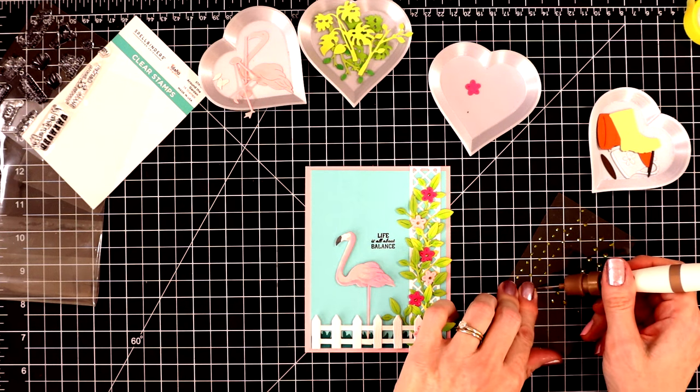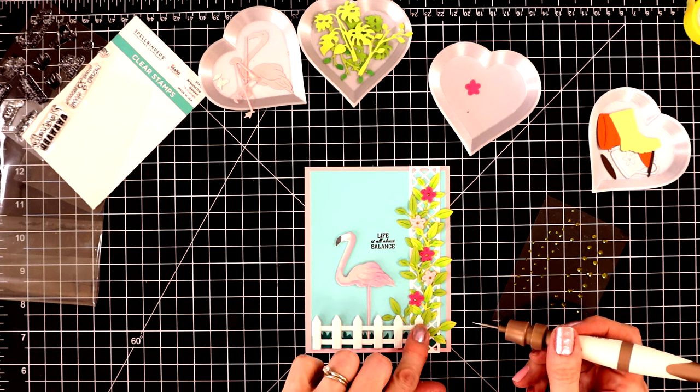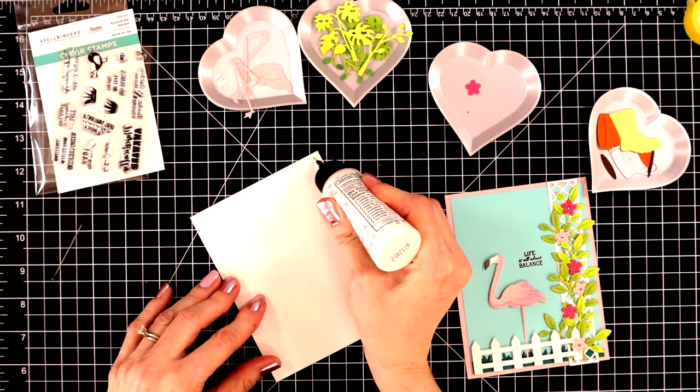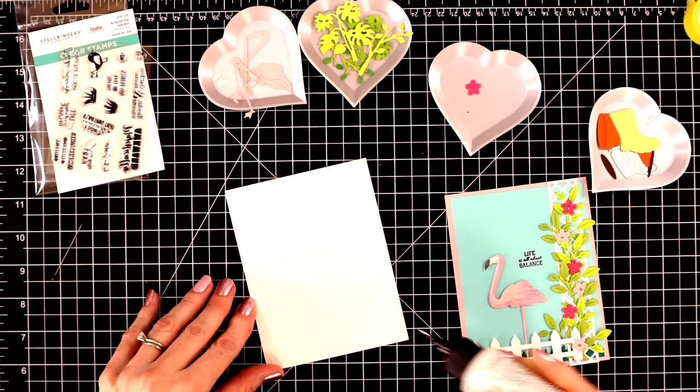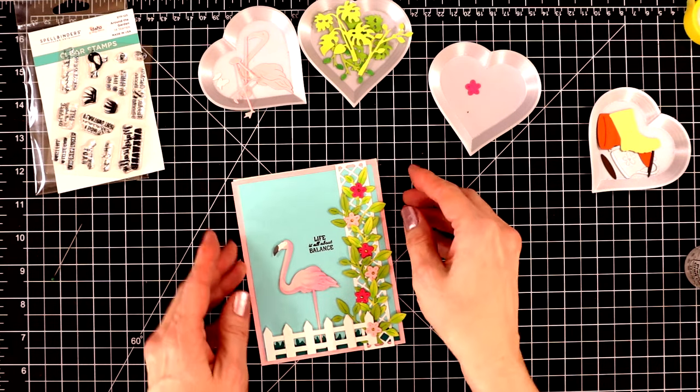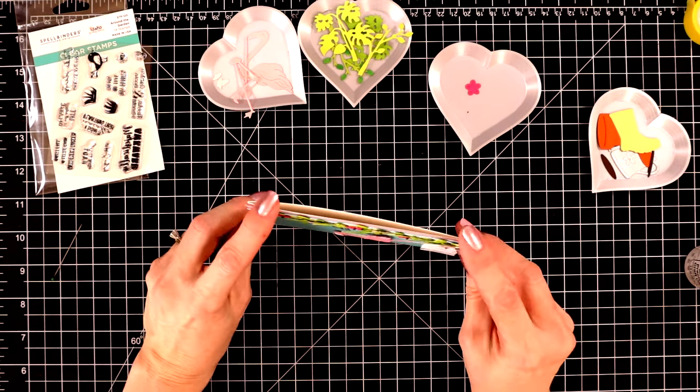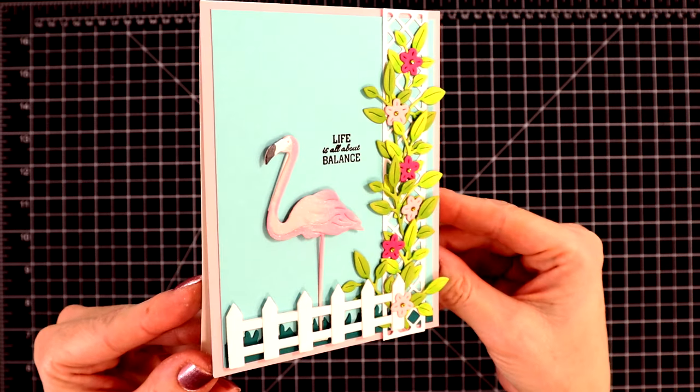I'm adding the glue to the card base this time so that I don't accidentally smear my sentiment. Versafine onyx black ink needs a little bit of time to dry. And here is a close-up of the finished card. Isn't that so much fun? There are so many more cards that I want to create using these really fun gardening sets. I didn't even get to the rain boot or the watering canister yet.